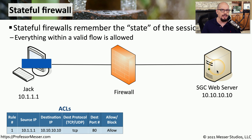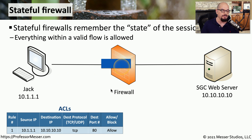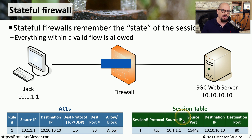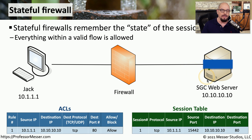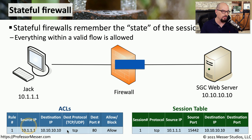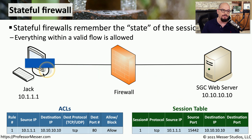Notice there is not another rule that allows traffic the other direction. Since this is a stateful firewall, it knows that if a conversation is beginning from Jack, it's going to allow the return communication through the firewall automatically. When Jack's traffic hits the firewall, it's evaluated, that particular flow is allowed, and the firewall creates a state table. The session table has information about this flow: source 10.1.1.1, source port 15442, heading to 10.10.10.10 over port 80. When the SGC web server responds, the firewall sees no explicit rule allowing it, but finds an active session table entry showing this is part of an active communication — and therefore allows that traffic back through to Jack's computer.